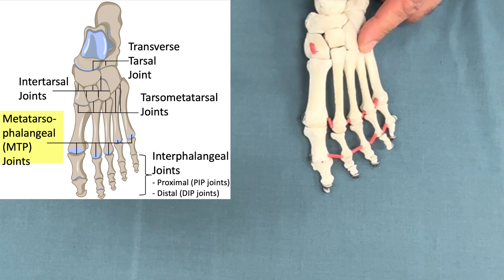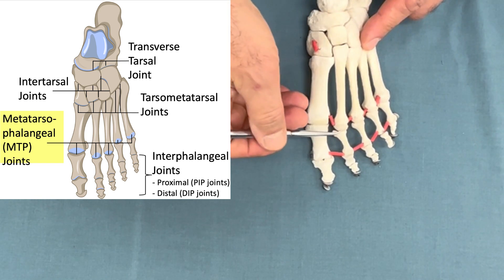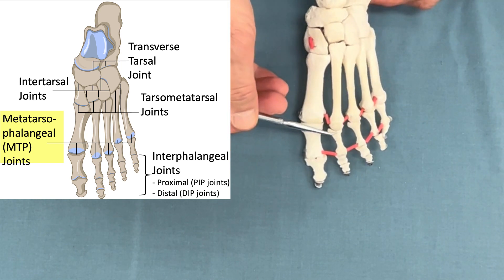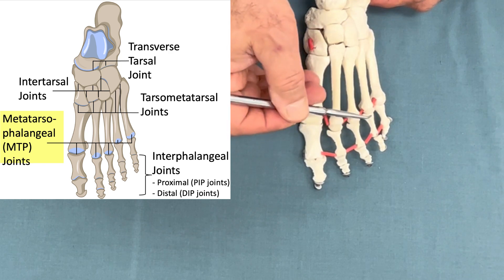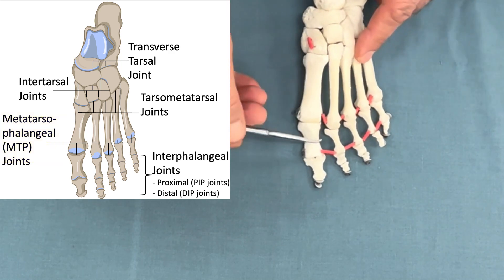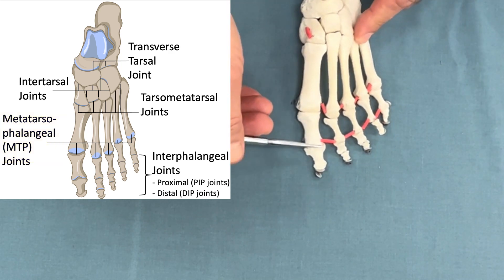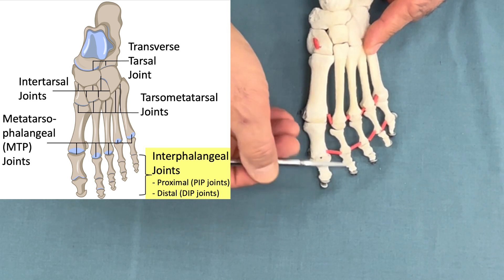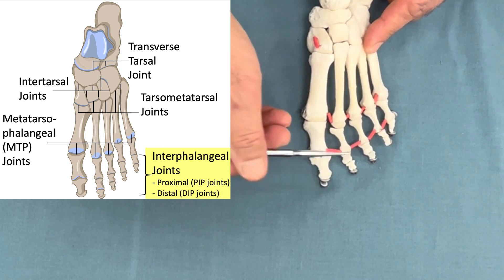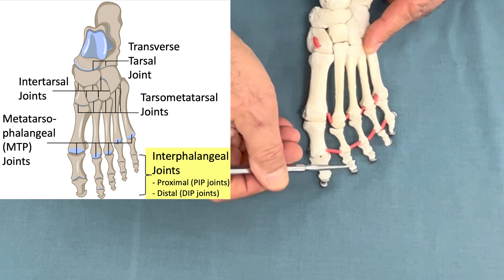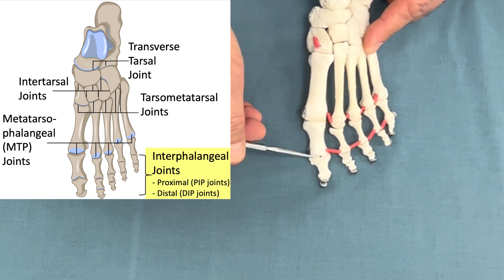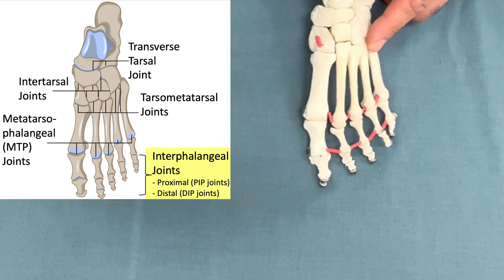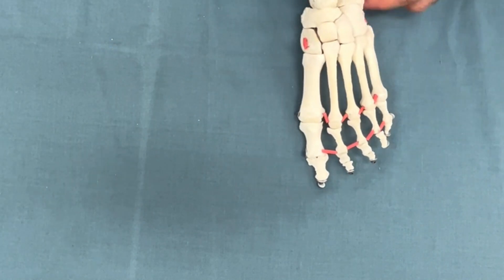Going down further we have the metatarsophalangeal joints, which are synovial condylar joints made between the head of the metatarsals and the base of the proximal phalanges. Last but not least we have the interphalangeal joints — one in the big toe and two in the other toes (proximal and distal). These are synovial hinge joints, allowing only flexion and extension.